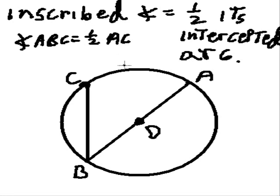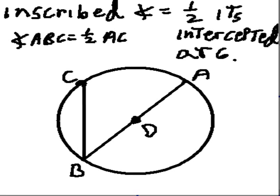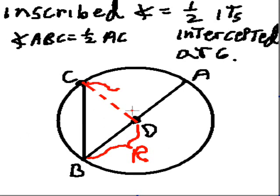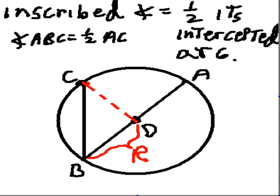That looks like a toughie, but it's not. First, let me look at something here. What's this segment from the center to the circle? That's a radius. And if I draw another radius from the center to C, that's a radius too. So those two segments are equal — both radii.